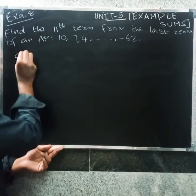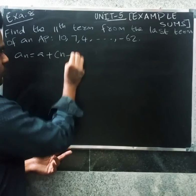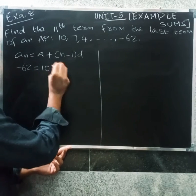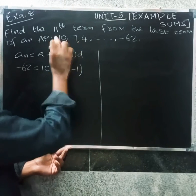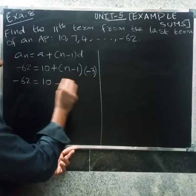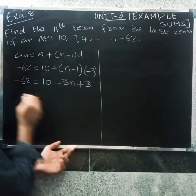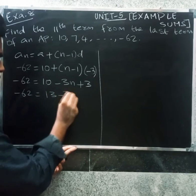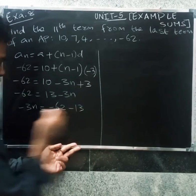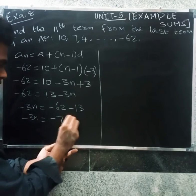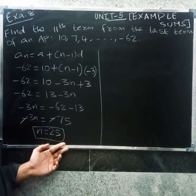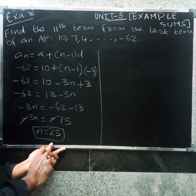Using aₙ = a + (n−1)d, where the last term is −62, a = 10, and d = 7 − 10 = −3. So −62 = 10 + (n−1)(−3), giving −62 = 10 − 3n + 3, so −3n = −75, therefore n = 25. The AP has 25 terms.